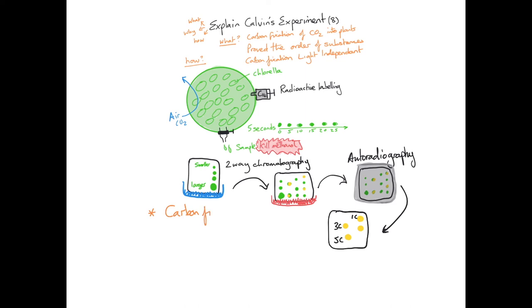From these results, he found that carbon fixation occurs to RUBP, that the first molecule to appear in high amounts is G3P, followed by TP, triose phosphate.